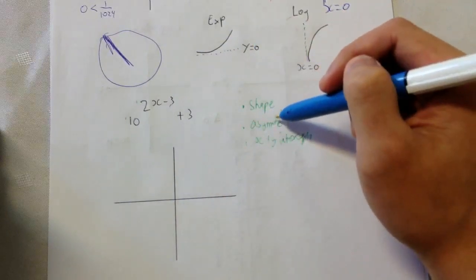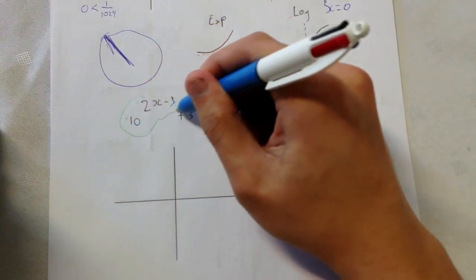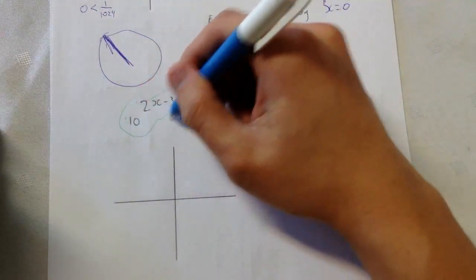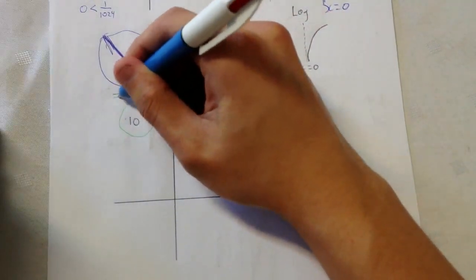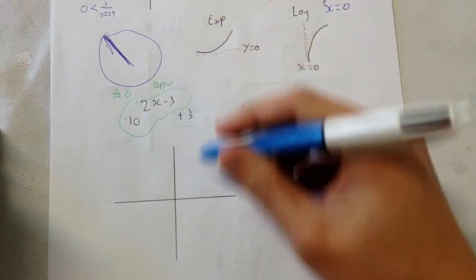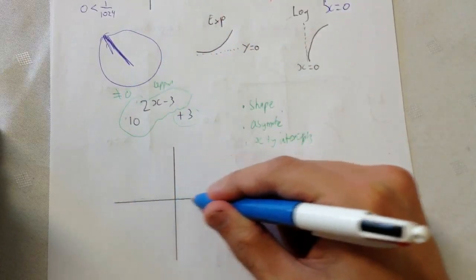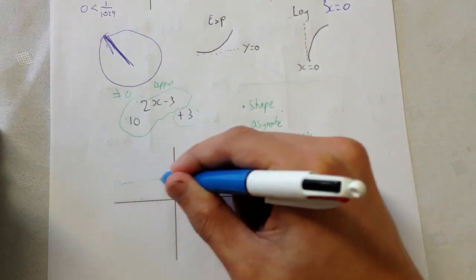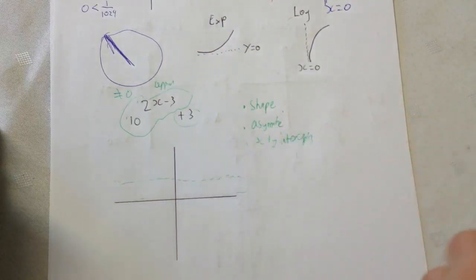Next, let me figure out where the asymptote is. So we know the exponential part, this entire thing will never equal zero. It will always be approaching zero. So if we move it up by three, instead of being y equals zero, we're going to have y equals three. So that is our asymptote.